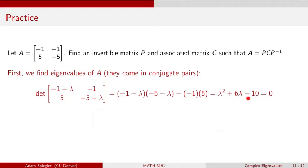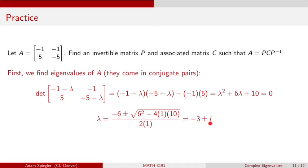We cannot factor this quadratic over the real numbers. Using the quadratic formula, we can find that lambda is going to equal minus 3 plus or minus i. So we have two complex roots to this characteristic equation, corresponding to the two complex eigenvalues for matrix A: minus 3 minus i, and its conjugate minus 3 plus i.